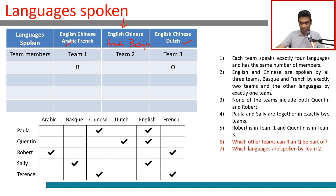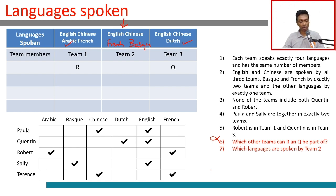So which other teams can Robert and Quentin be part of? No other team — Robert speaks Arabic and only one team speaks Arabic; Quentin speaks Dutch and only one team speaks Dutch. So they cannot be part of any other team. Team 2 speaks English, Chinese, French, and Basque.